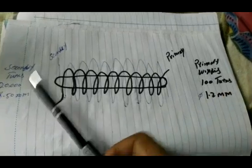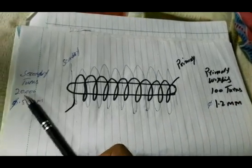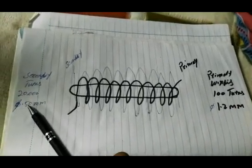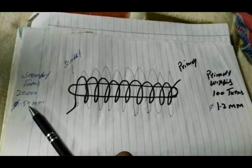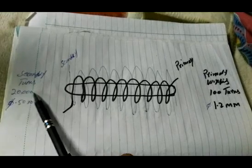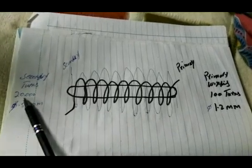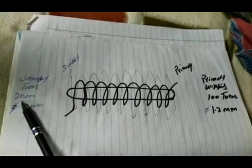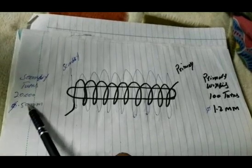We need primary winding 100 turns, 1.2 millimeter, and secondary 2,000 turns, 0.50 millimeter.